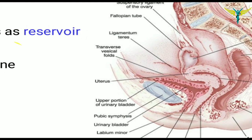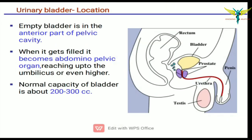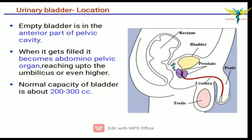The empty bladder is located in the anterior part of the pelvic cavity. When it gets filled, it becomes abdominopelvic — that is, it reaches up to the umbilicus or even higher. So when it gets filled, it becomes an abdominal pelvic organ.